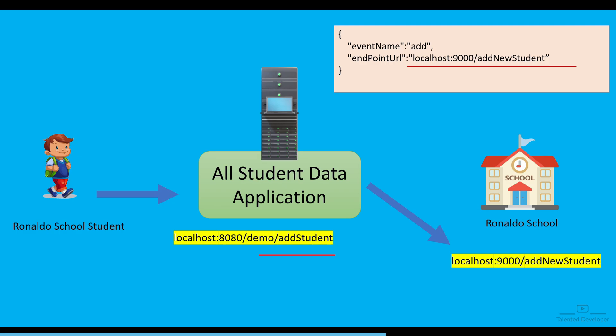You can think of webhooks as a digital messenger that delivers information instantaneously. For example, with GitHub you can set your webhook endpoint URL, and whenever any code push happens you will get an immediate notification. Webhooks are widely used to automate processes, synchronize data, and create seamless integrations between different applications.